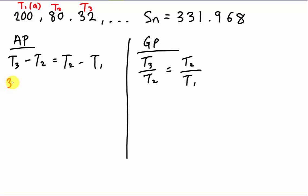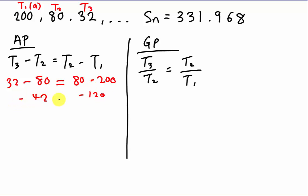Our third term minus second term will be 32 minus 80, which gives negative 48. We check whether it equals the second term minus the first term: 80 minus 200 gives negative 120. Obviously, negative 48 does not equal negative 120, so this is not AP.